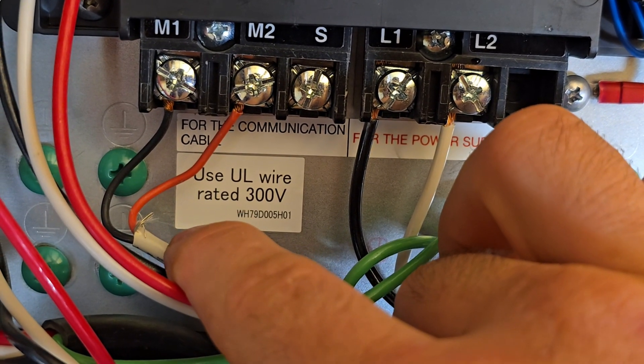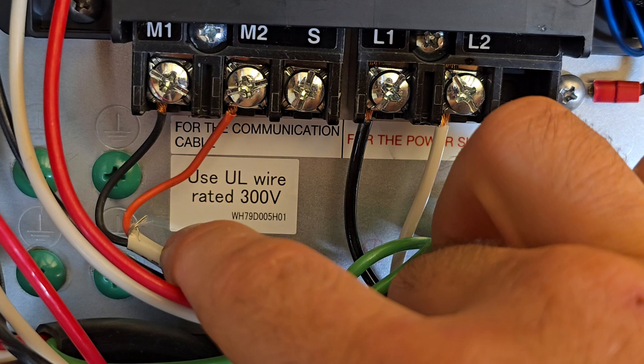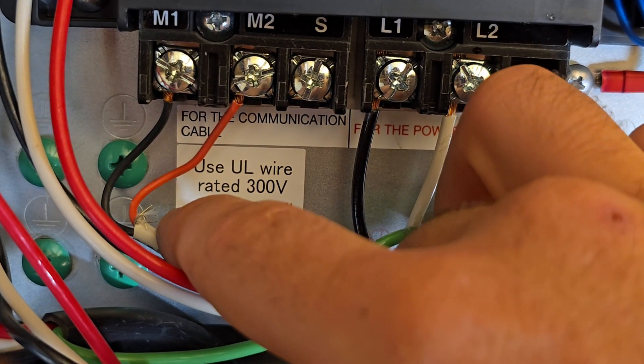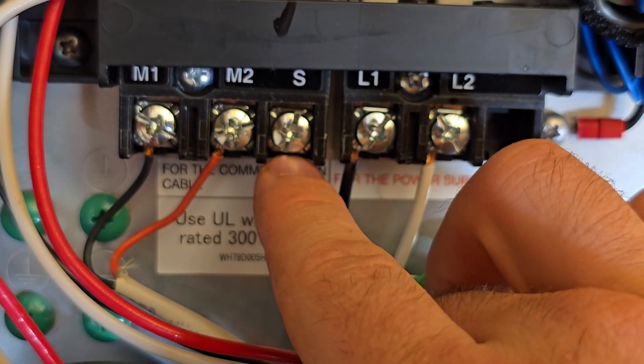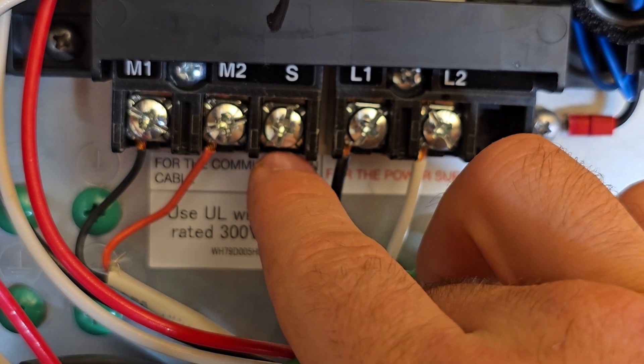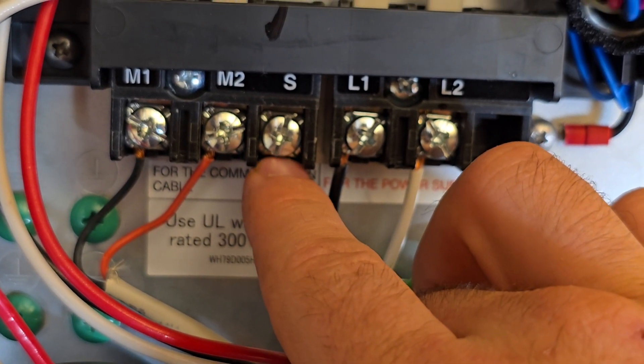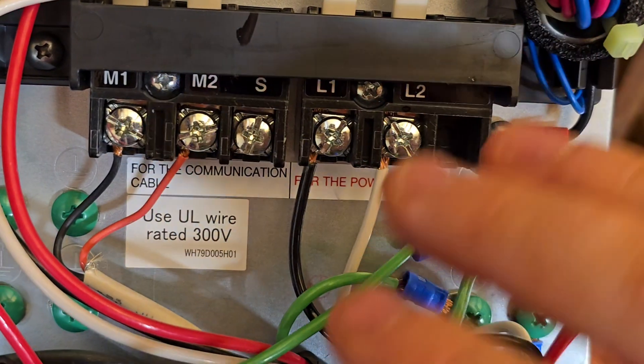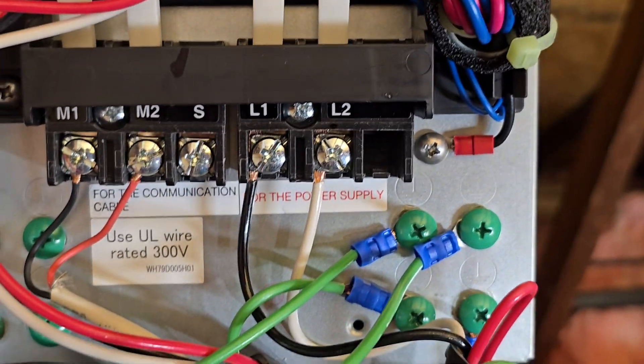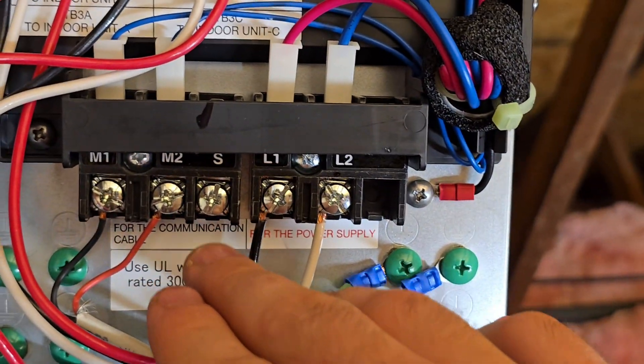So it doesn't matter which end you want it hooked up to, but your shield should only be hooked up to one side – either the compressor side or the branch box side. It doesn't matter which, for either branch box if you have multiple in the system. I just like having everything hooked up to the compressor.